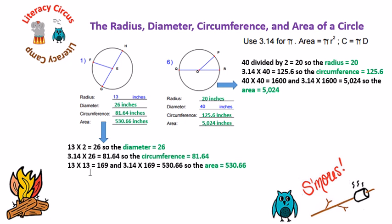13 times 13, which is the radius to the second power, is 169. And 3.14 times 169 equals 530.66. So the area of this first circle is 530.66. That is how we got the diameter, circumference, and area.